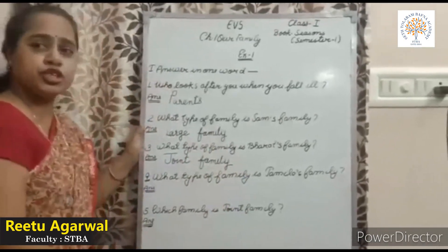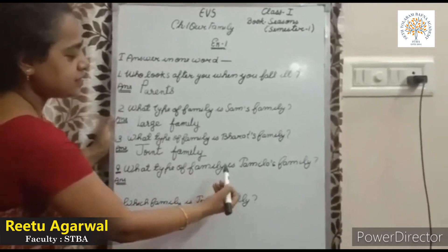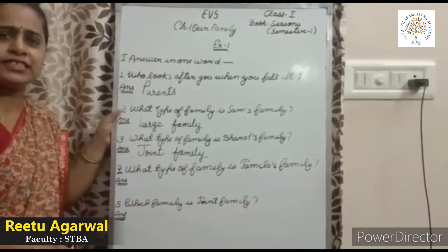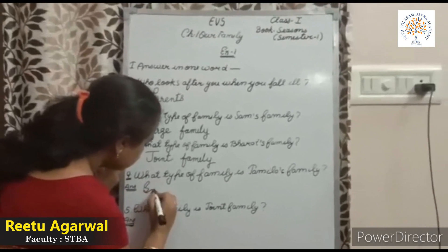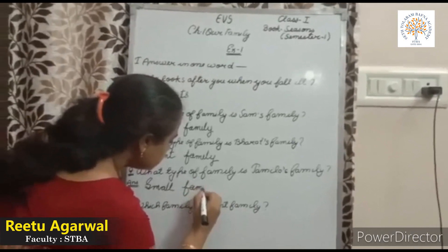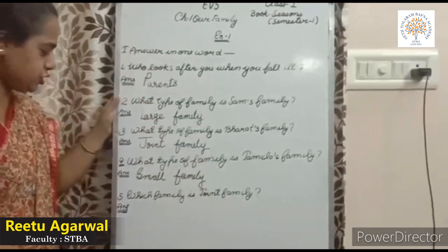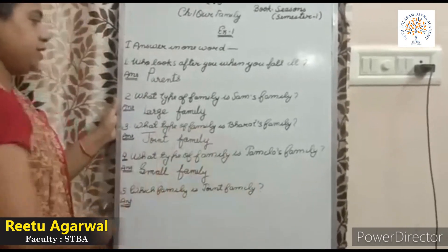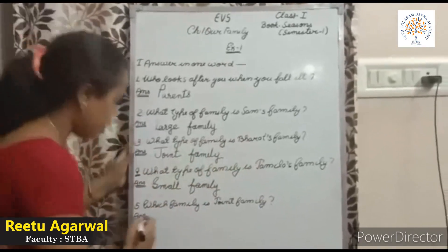Question number four: what type of family is Jamila's family? Jamila's family is small family. And now the last question: which family is joint family? We know that Bharat's family is joint family.